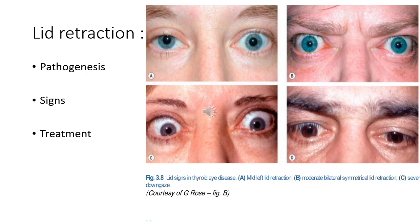Lid retraction occurs in about 50% of patients with Graves' disease. Postulated mechanisms include: fibrotic contracture of the levator muscle with adhesion to overlying orbital tissue; fibrosis of the inferior rectus similarly inducing lower lid retraction; secondary overaction of the levator-superior rectus complex in response to hypotropia produced by fibrosis of the inferior rectus; and humorally induced overaction of Müller's muscle due to sympathetic overstimulation from high thyroid hormone levels.